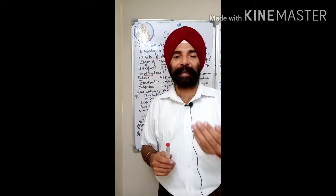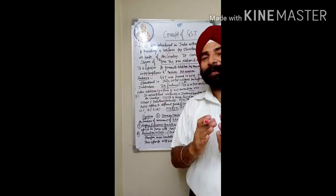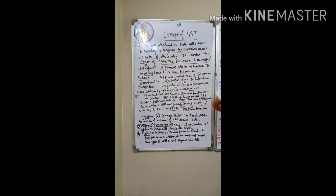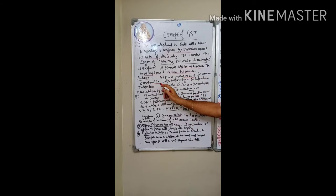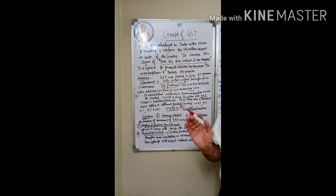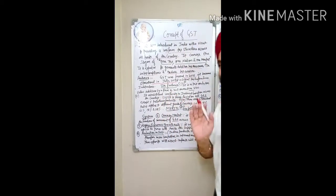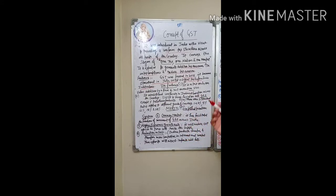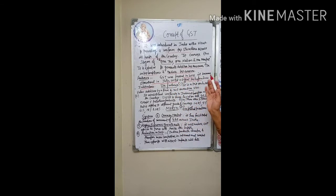Now, what are the features of GST? First, it was passed in 2016 and it became operational in July 2017, when it was introduced across the country. It is the biggest tax reform since independence — from 1947 until now, this is the largest tax reform introduced.